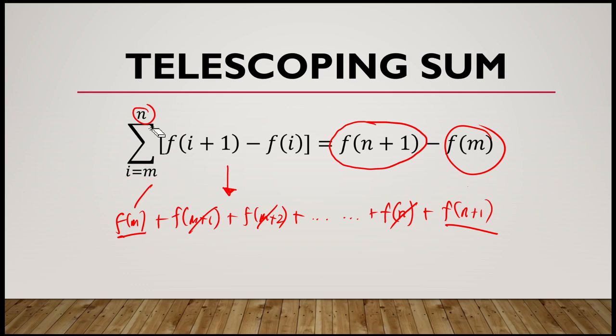It is called a telescoping sum because if you know about a retractable telescope — one that you can pull to extend and then collapse — that's the analogy. The series is called telescoping sum because the long telescope can be retracted or collapsed so that only the beginning and the ending of the telescope are visible.